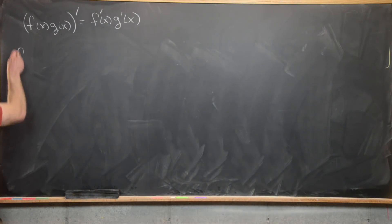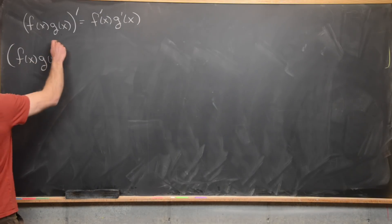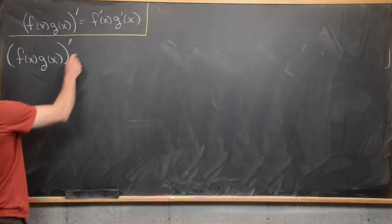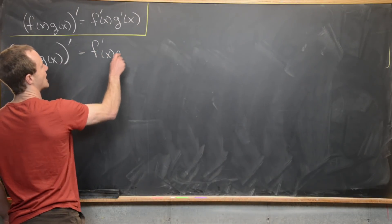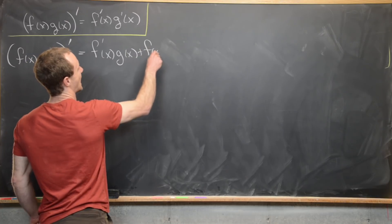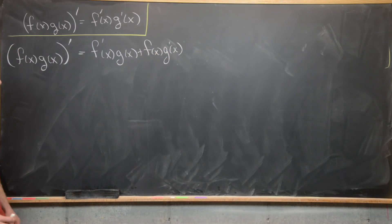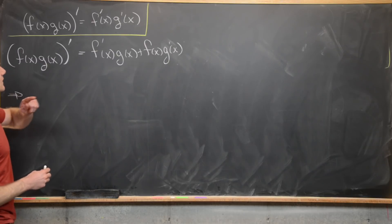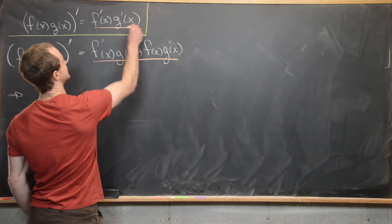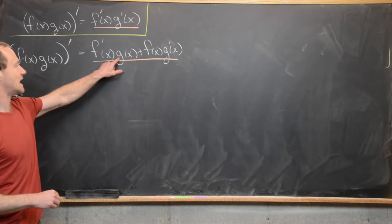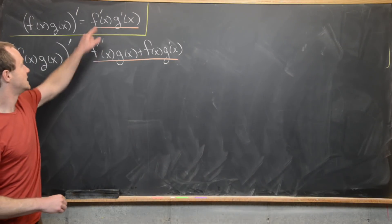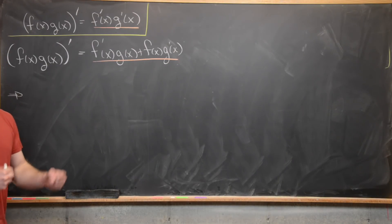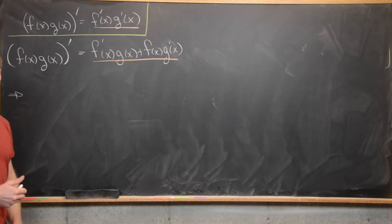Let's start with the left-hand side: f(x)g(x), and take the derivative — denoted as (f(x)·g(x))'. By the product rule, that equals f'(x)g(x) + f(x)g'(x). So this boxed equation is true if and only if f'g + fg' equals f'g'. We've now got a differential equation that we can play around with — tweaking something involving f and g until we find a solution.